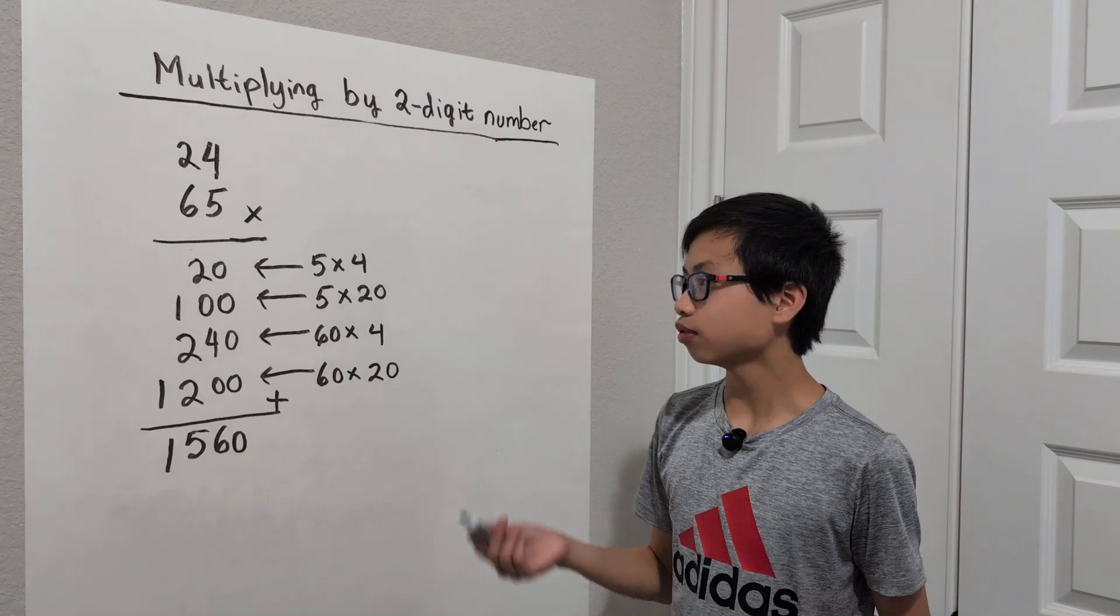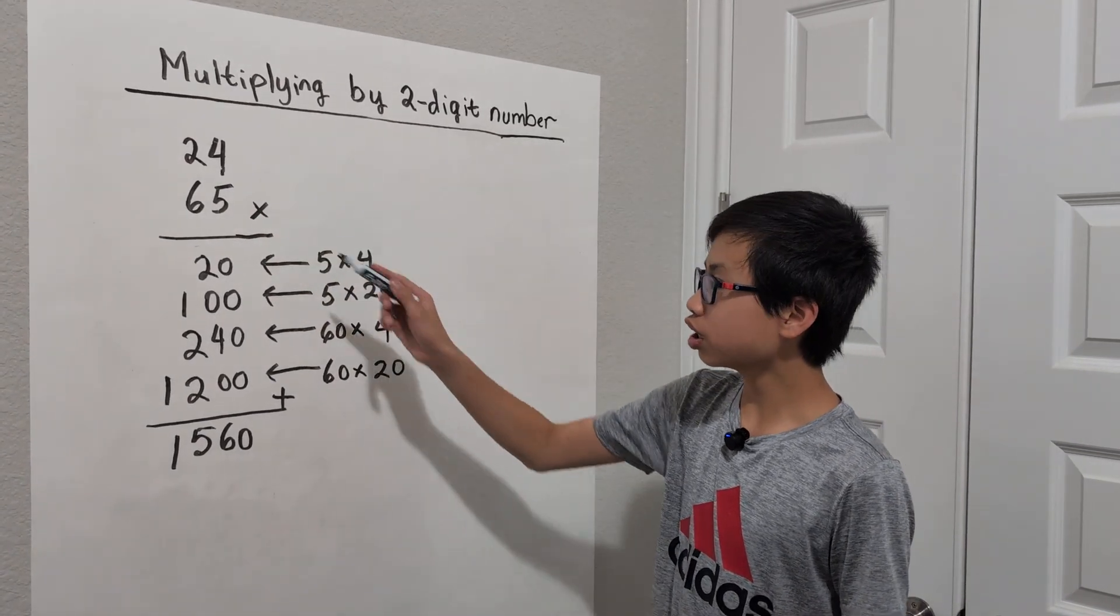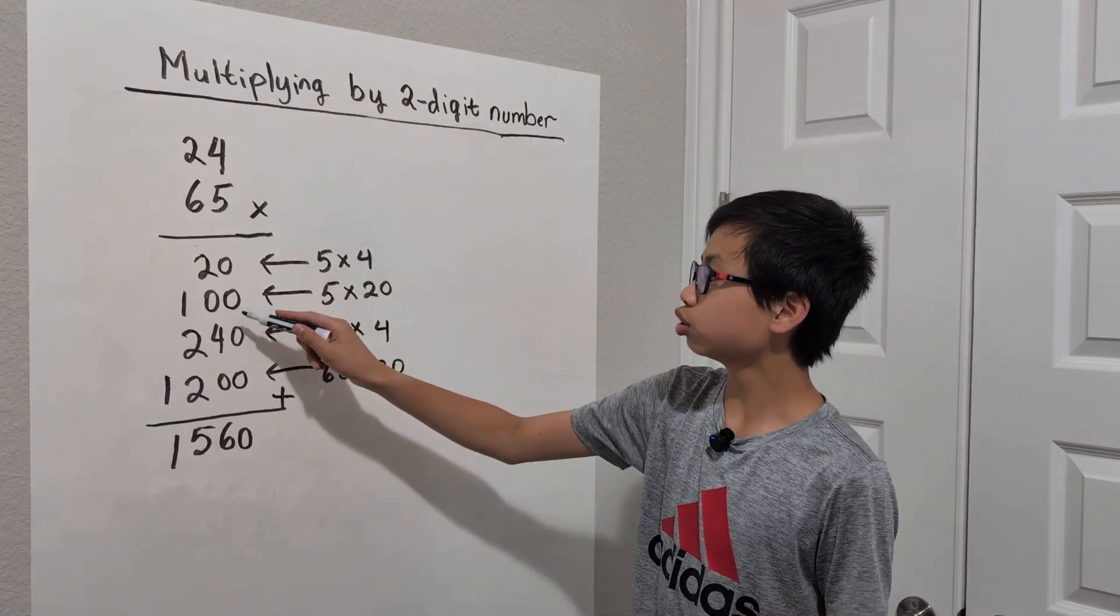Why are we doing that? Well, it's actually because the 2 right here is in the tens place. So we're going to do 5 times 20 is equal to 100.